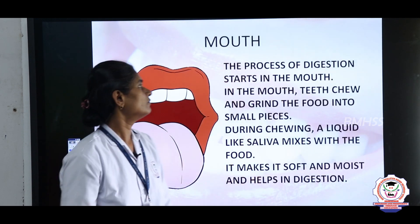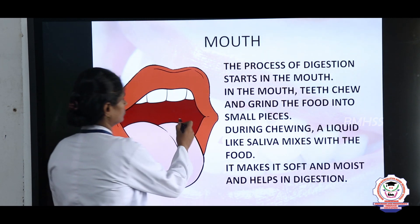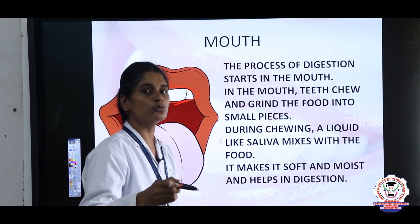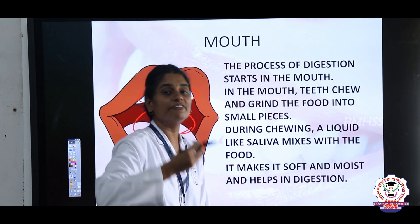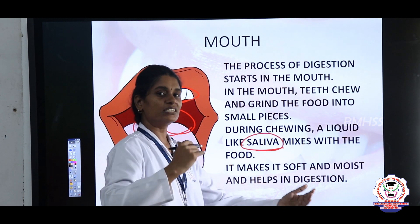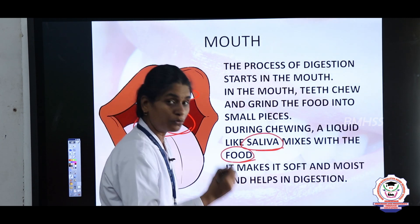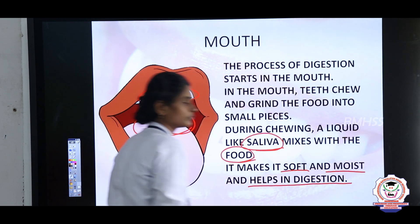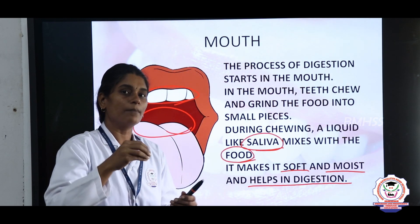The process of digestion starts in your mouth. In the mouth, the teeth grind and chew the food into small pieces. While chewing, your mouth produces a liquid called saliva. This saliva mixes with your food and makes it soft and moist, which helps in digestion. The food has to be soft so that you can swallow it.